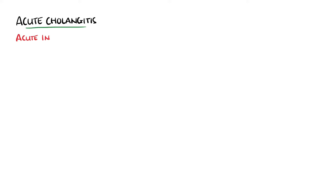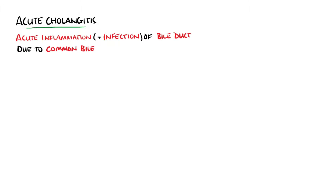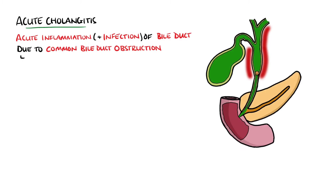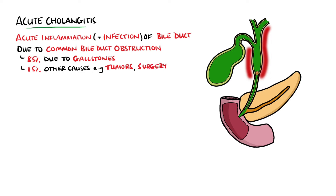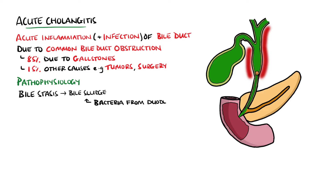Acute cholangitis is where there is bile duct inflammation and typically a biliary infection due to an obstruction of the common bile duct. In 85% of cases, this obstruction is due to a gallstone, but it can also be caused by tumors, previous surgery, and other causes. This obstruction leads to bile stasis, which can generate bile sludge - a perfect breeding ground for bacteria that can ascend from the duodenum and travel up the biliary tree.